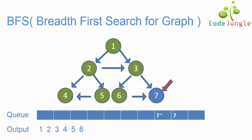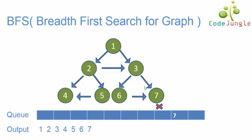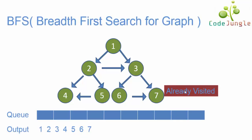Now coming to element 7: element 7 has no neighbor nodes, so nothing has been pushed into the queue, and 7 has been popped out and moved to the output. Then the next element in the queue is again 7. As 7 has already been visited, it will not be moved to the output but will be popped out from the queue.